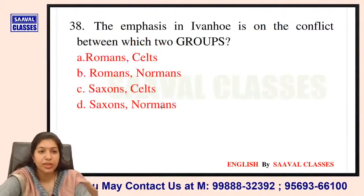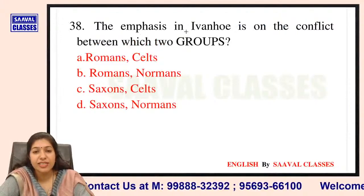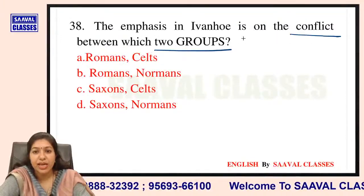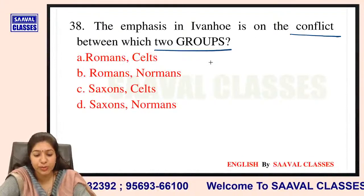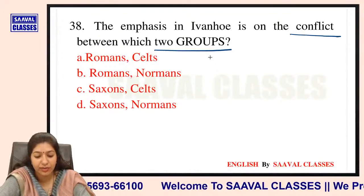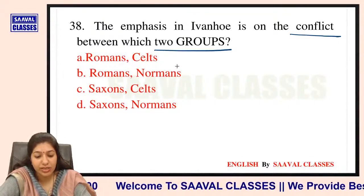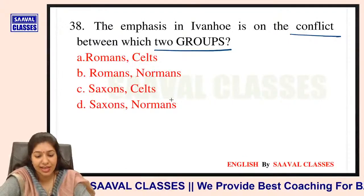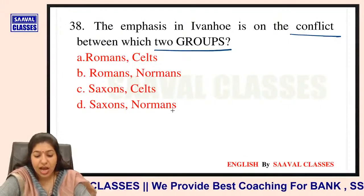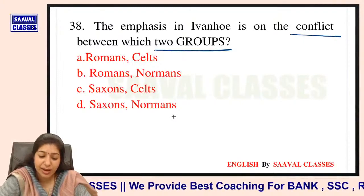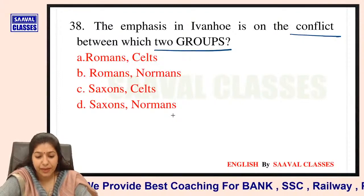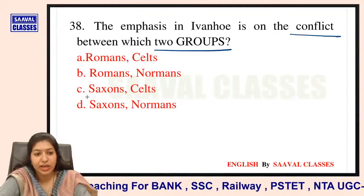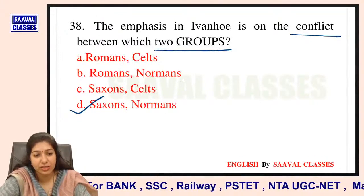Question number 38: The emphasis in Ivanhoe is on a conflict between which two groups — Romans and Celts, Normans and Saxons, ya Celts and Saxons? They are Saxons and Normans.